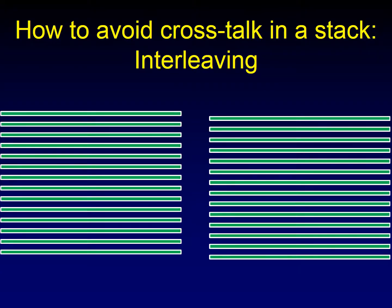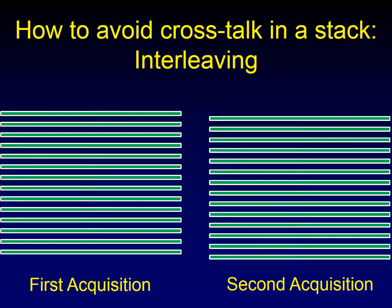When we interleave, we separate out all of the odd-numbered images and do that as one acquisition, then go back and do all the even-numbered images as a separate acquisition. So during each acquisition, the images are not adjacent to one another, and thus don't cause any crosstalk. Then, once we've done both acquisitions, we shuffle these back together into a more meaningful stack that is easy to look at on the PACS.